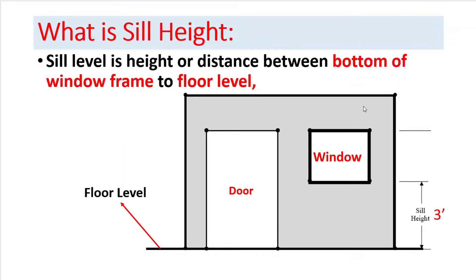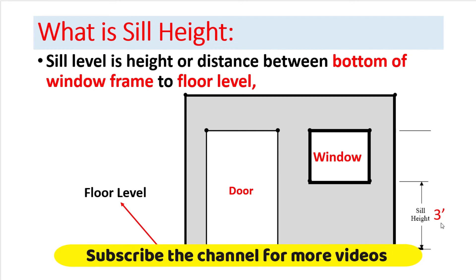So let's talk about sill height. Sill height is actually the distance between the bottom of the window frame to the floor level. As you can see in this particular example, the sill height of this specific window is 3 feet. This is the standard sill height of any window, and it could vary depending upon the type of structure, height of the building, and height of the wall. Sill height normally varies accordingly, but this is the minimum height of sill that is kept during construction.